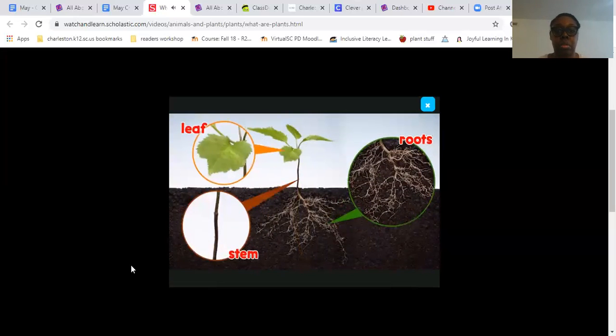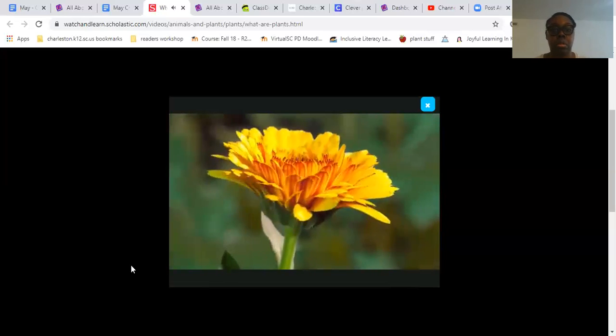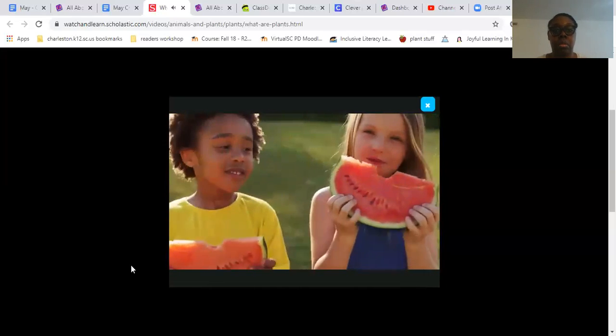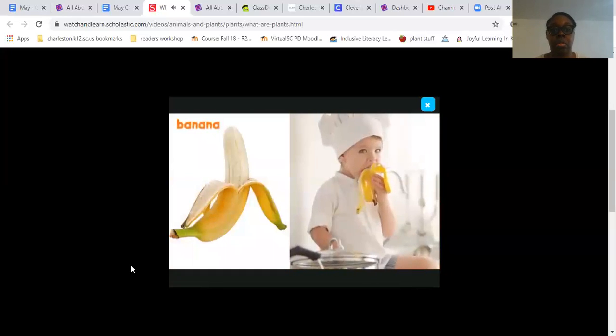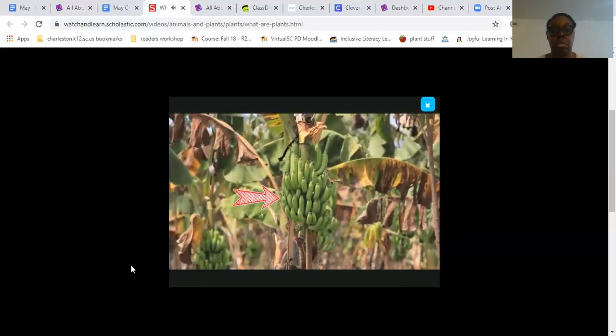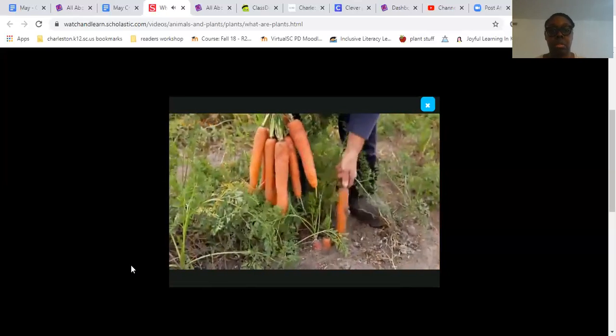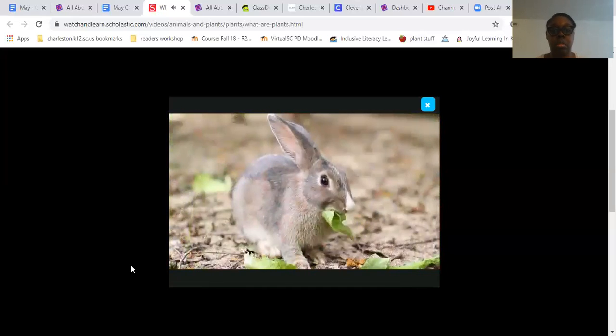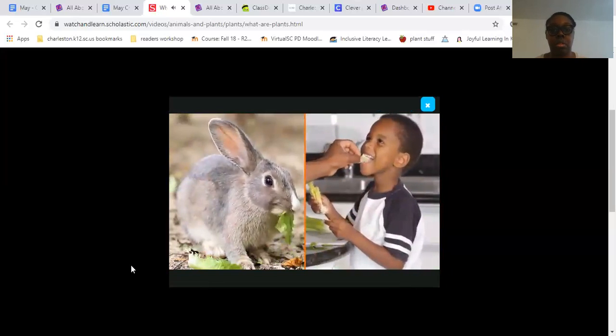Many plants grow flowers. Some even grow fruits. We eat fruits and other plant parts, too. Do you like bananas? A banana is a fruit from the banana tree. Have you ever eaten a carrot? A carrot is the root of a carrot plant. This bunny likes to eat plants, too. People and animals need plants to live.